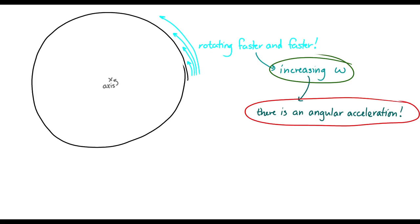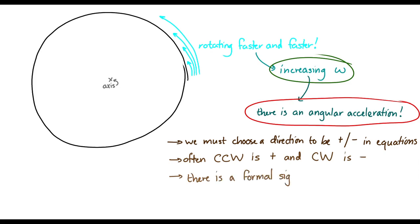Now, if we're going to apply equations for angular speed and angular velocity, then we have to choose a direction to be positive or negative. Now, often, counterclockwise is chosen to be positive and clockwise is chosen to be negative. And in fact, there is a sign convention for this.